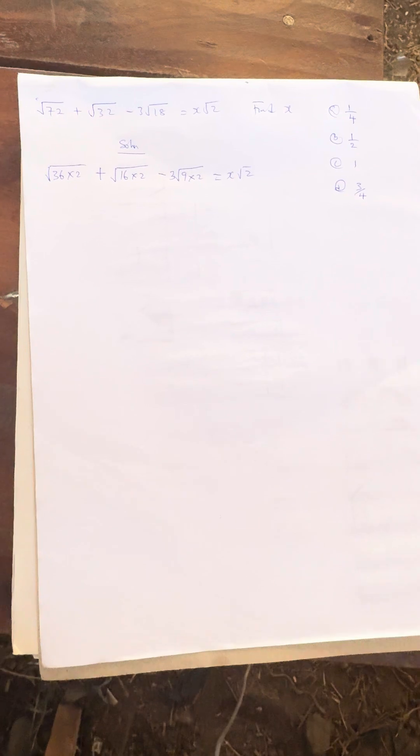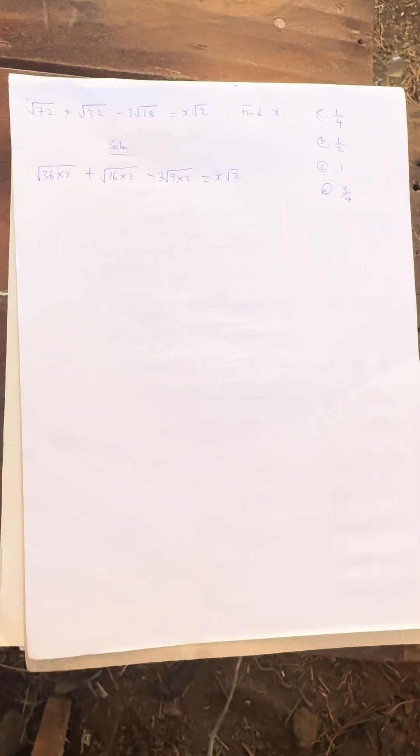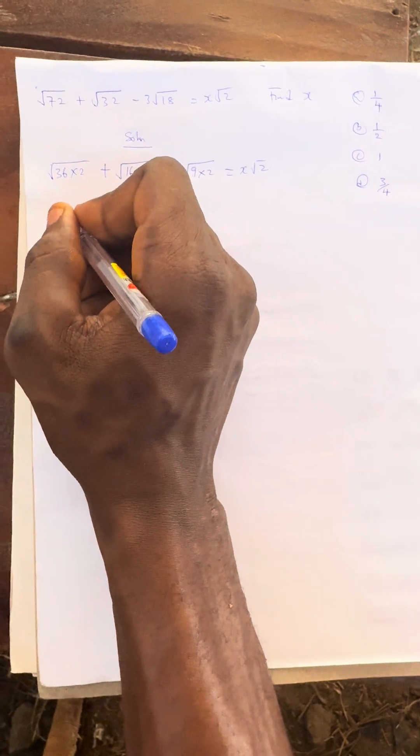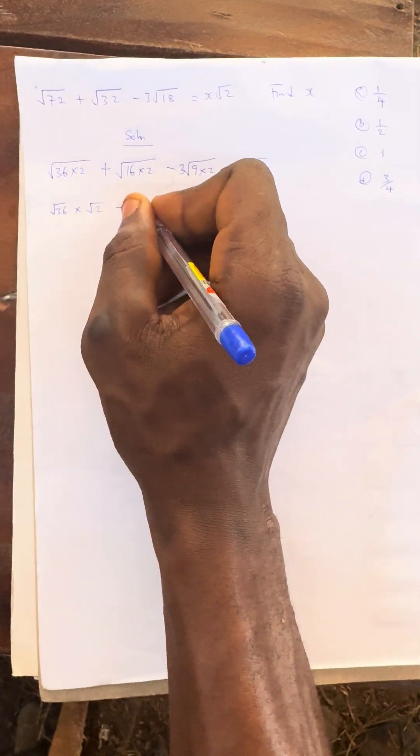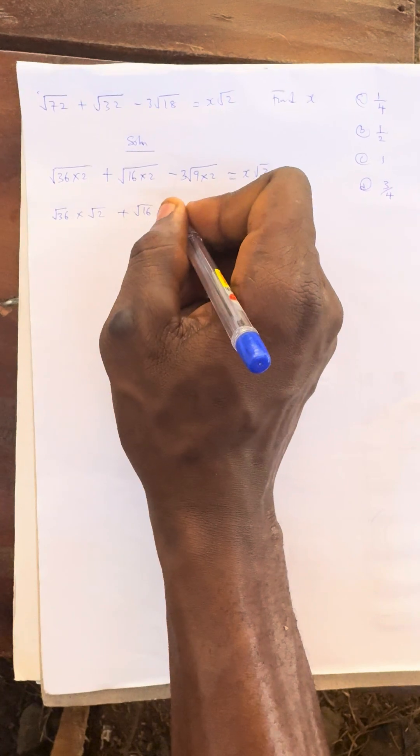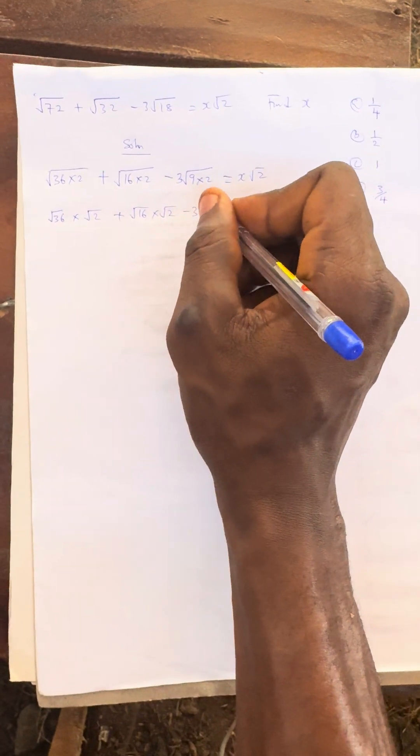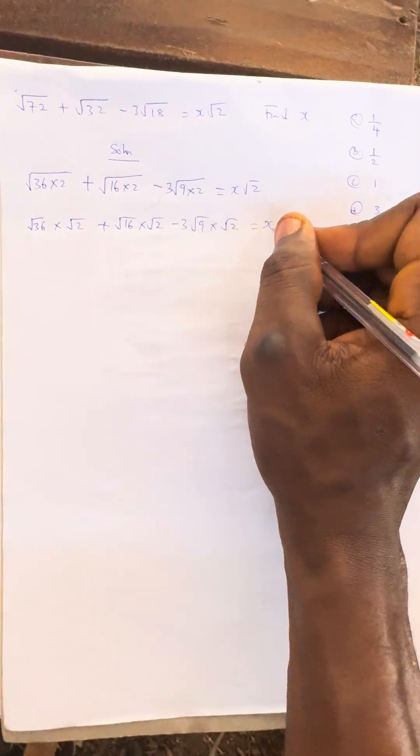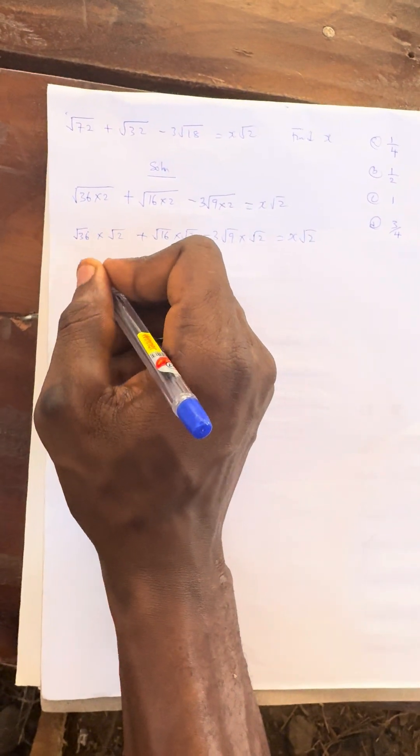With this, you have to be very patient. We are getting to the calculator method as well. This can be split into √36 × √2 + √16 × √2 - 3√9 × √2, everything equals x√2.